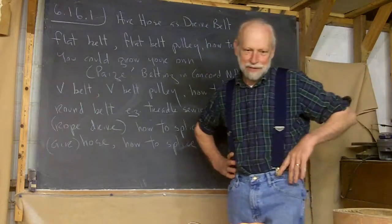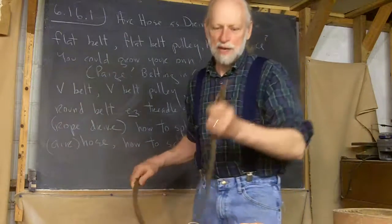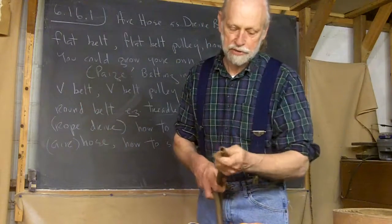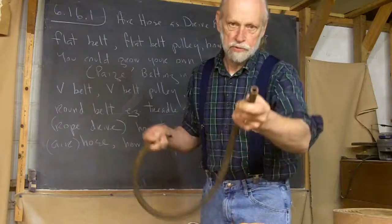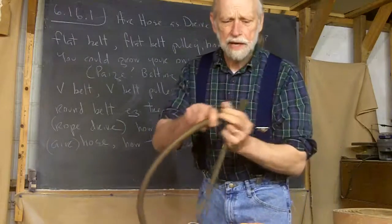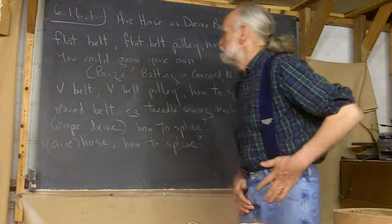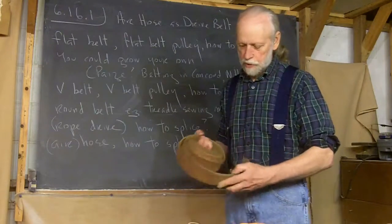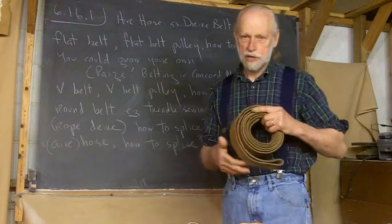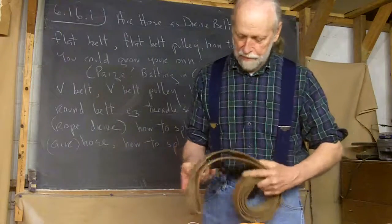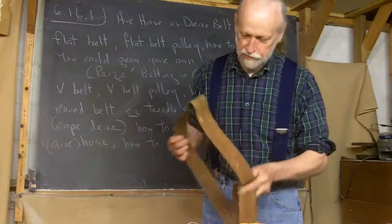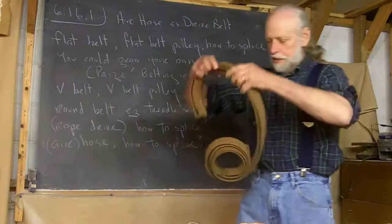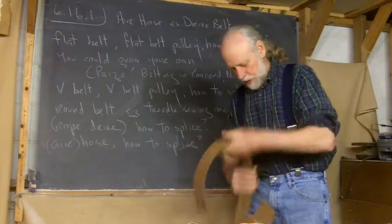Air hose as a drive belt. Well, this is air hose. It's what you use when you put air in your tire, a high-pressure air hose. It can be a drive belt, but let's back up. A flat belt. Here's a flat belt. You know, when you want to take power from one shaft to another, flat belts are an old way of doing it. This one's rather stiff because it hasn't been used for a long time. And, you know, how do you splice it?